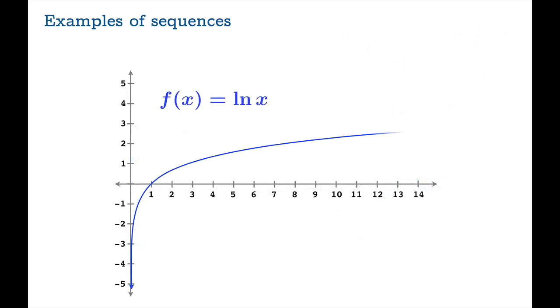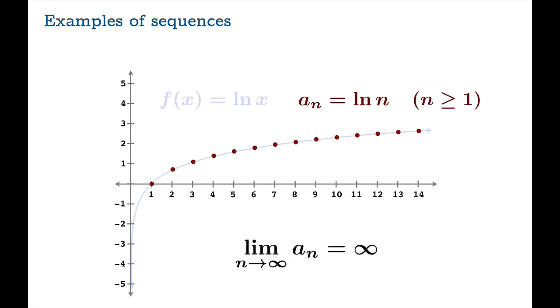So here's another example. Let's take the natural log function and, once again, restrict our domain to the natural numbers. So a_n is ln of n, n greater than or equal to 1. Now, we know that the natural log function grows without bounds. So here what we'll say is the limiting value as n goes to infinity of a_n is infinity. And technically, this means the limit doesn't exist, but we are describing a particular way it fails to exist, which is to say that the values grow unbounded.